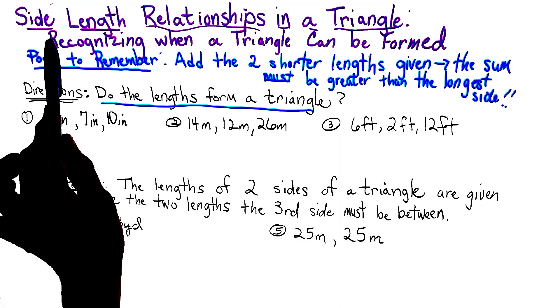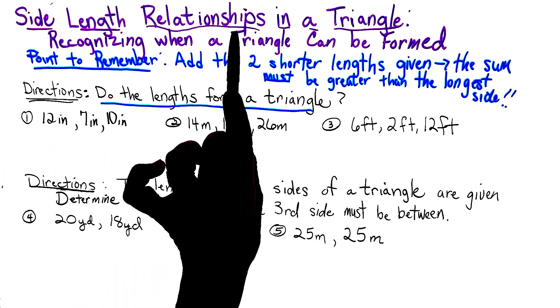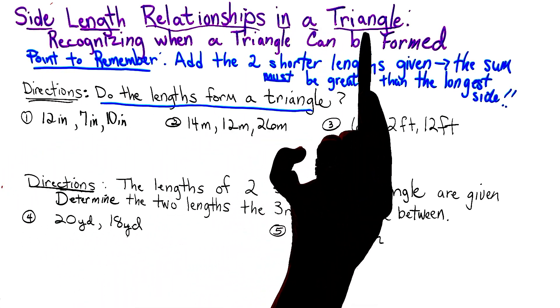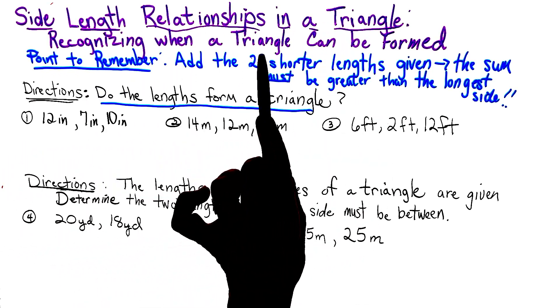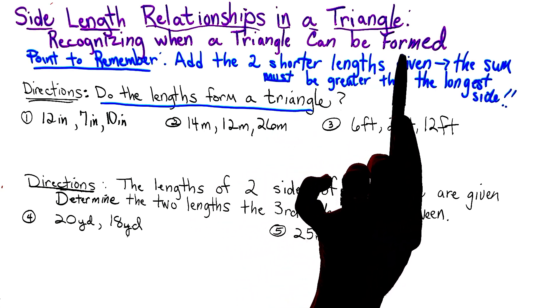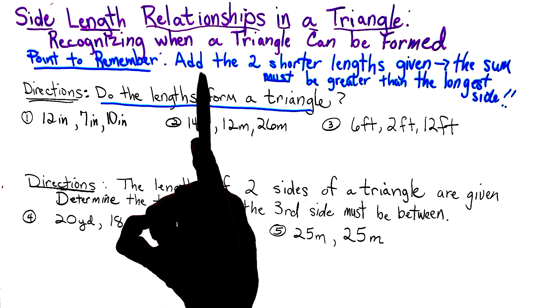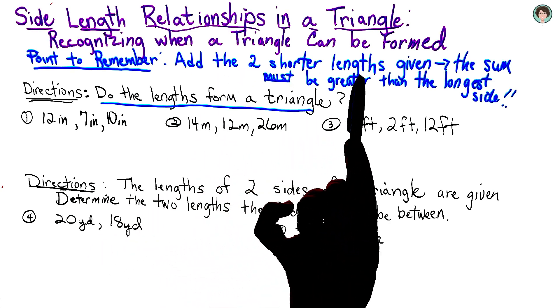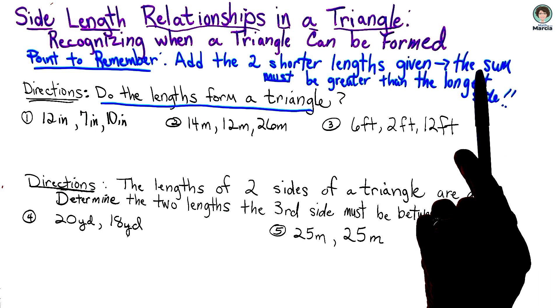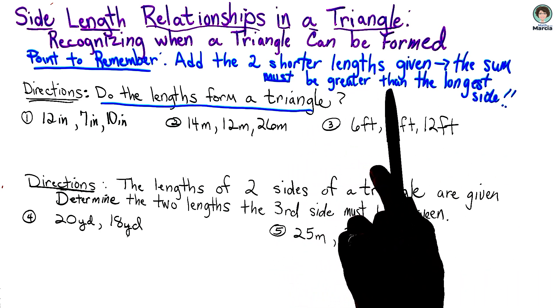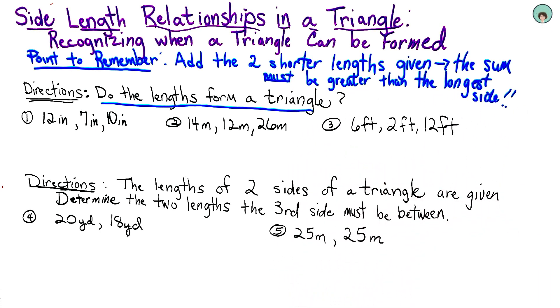For this lesson, we're going to be looking at side length relationships in a triangle. We're going to recognize when a triangle can be formed. So the very important point to remember is we're going to add the two shorter lengths given, and that sum must be greater than the longest side that's given.